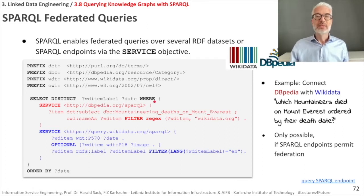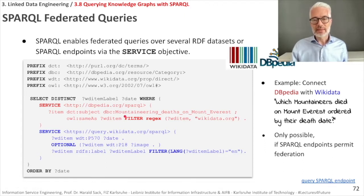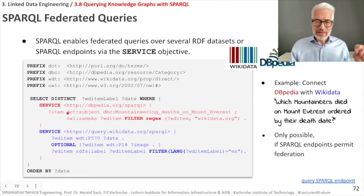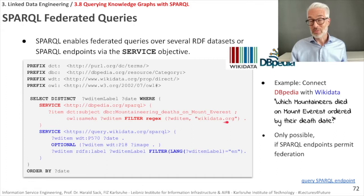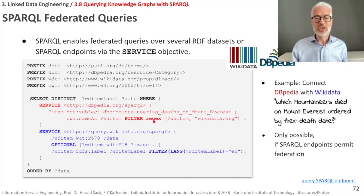Encapsulated in curly brackets, in red we have the SPARQL query to DBpedia, asking for items with the subject dbc:mountaineering_deaths_on_Mount_Everest, which should be owl:sameAs the Wikidata item. In DBpedia there are lots of sameAs directives connecting to many services, so we apply a FILTER with a regular expression on the string in WDItem, requiring it to contain 'wikidata.org', to ensure we get the Wikidata item and not some other knowledge graph.